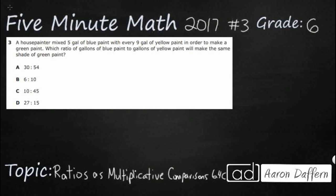So a house painter is mixing 5 gallons of blue paint to 9 gallons of yellow paint in order to make some green paint. So what we have are some sample ratios down here, and we need to find the sample ratio that is going to match this 5 to 9. So you can write a ratio as a fraction,